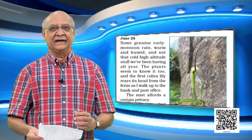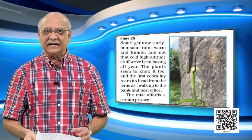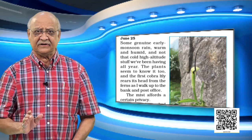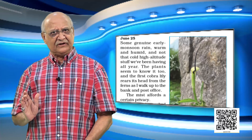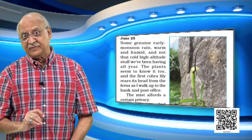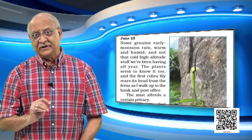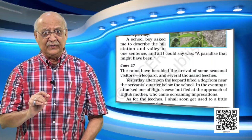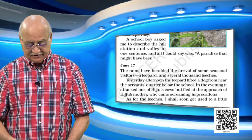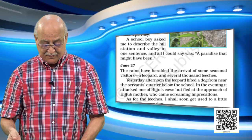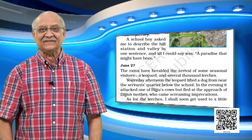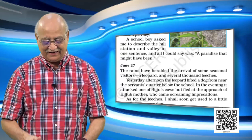In paragraph two, it's very interesting because it says the mist affords a certain privacy. You become very quiet, all by yourself, nobody around, very private. And so there is a very interesting paragraph where one word refers to heaven. A school boy asked the author to describe the hill station and valley, and all he could say was 'a paradise that might have been.' The word equivalent to heaven is 'paradise' — a paradise that could have been.